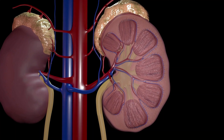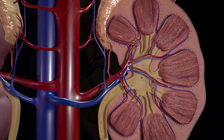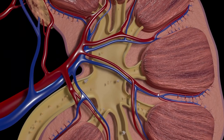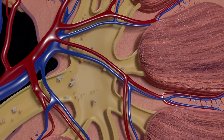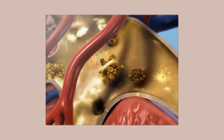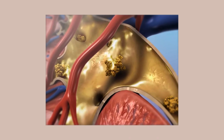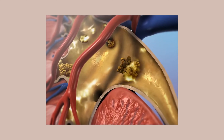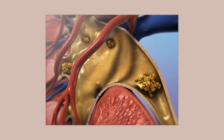While the kidneys are usually doing their function of filtering out waste products from the blood and excreting them through the urine, when the balance of fluids, salts, and minerals is off, kidney stones can develop. These kidney stones form in stages. The process begins when the urine becomes supersaturated with stone-forming substances like calcium oxalate and uric acid.